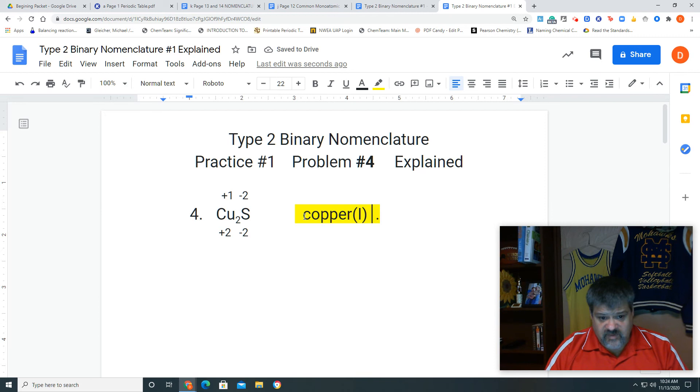Now, we don't put sulfur down, so we have to change the ending to id, so that is sulfide. So, we have copper, 1, sulfide.